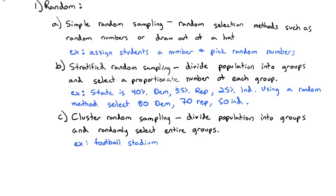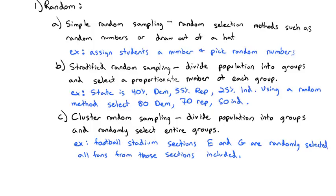An example of doing this might be a football stadium. And it has different sections in the football stadium. So instead of interviewing everybody in the stadium or random people through the stadium, it's easier just to hit one section at a time. So in the football stadium, sections E and G are randomly selected. And all fans from those sections are included. Cluster takes all people in each randomly chosen section, while Stratify takes a proportionate group out of each group.